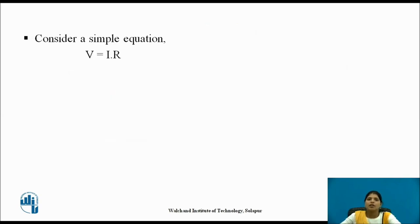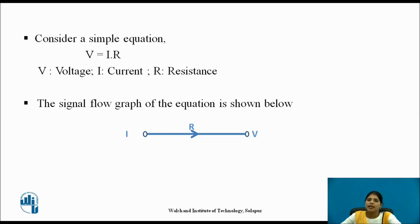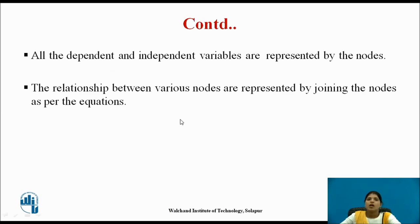Consider the simple equation V = IR, where V is the voltage, I is the current, and R is the resistance — this is Ohm's law. The signal flow graph of this equation is shown below. Here, the current I and the voltage V are the nodes, and these two nodes are connected by a branch. The voltage V depends on the value of current I, and the relationship between them is through R, meaning I gets multiplied by R to generate V.